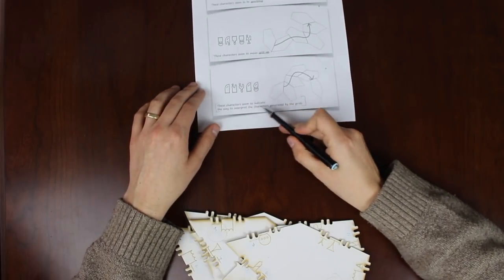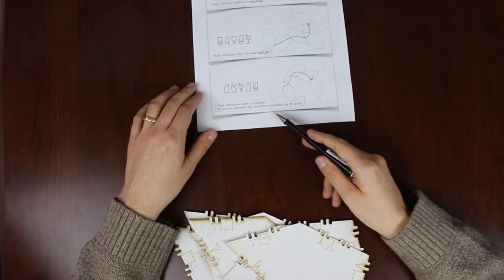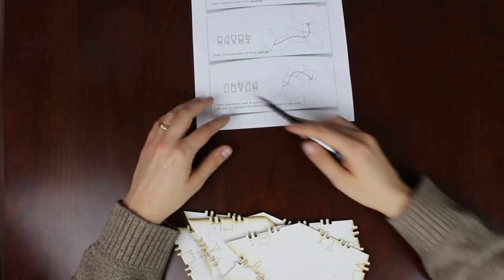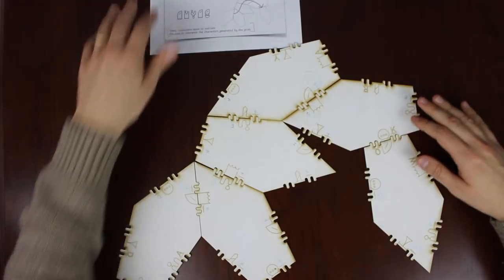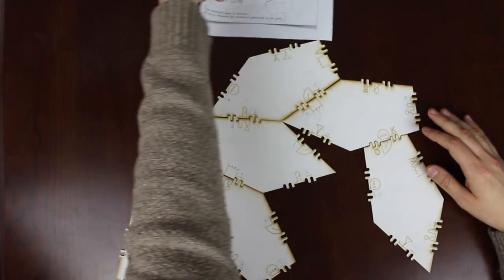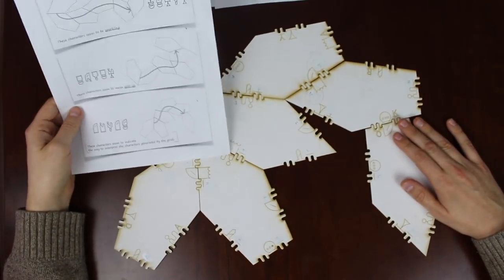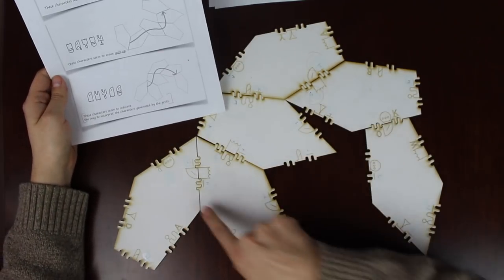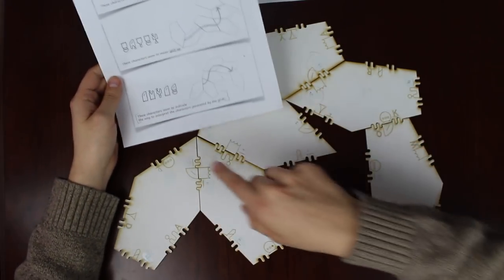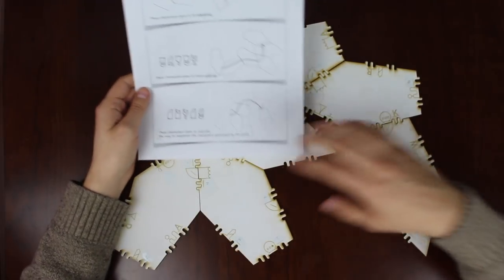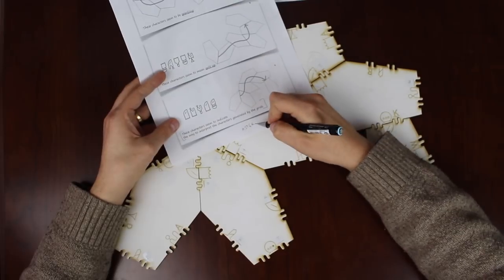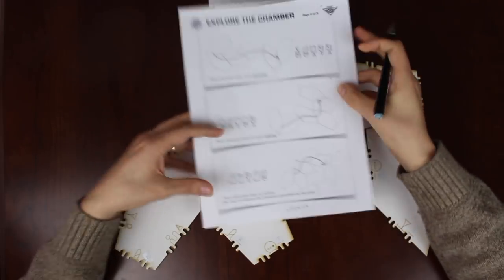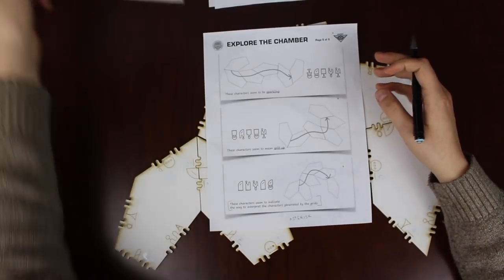So we're going to take a look at this now. This one says, these characters seem to indicate the way to interpret the characters generated by the grids. And we have a series of characters here. So let's put it all together. If you put together the characters in that shape, and read what it says, ignoring the first two characters as we've done for all of the other clues, it says asterisk.